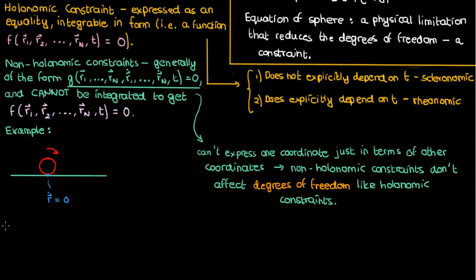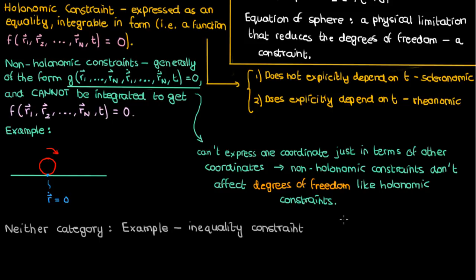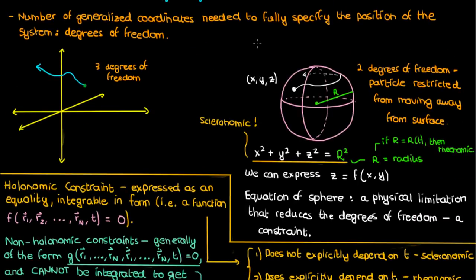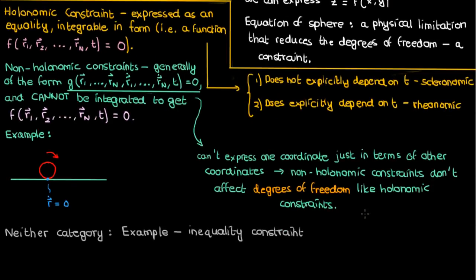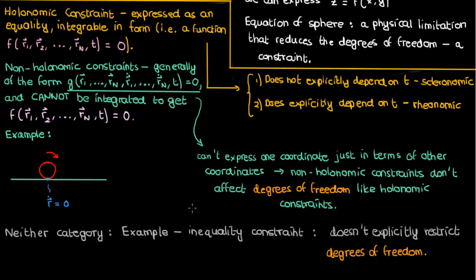There's also a third type of constraint — a more controversial one — that falls into neither holonomic nor non-holonomic. It's controversial because sometimes these neither-category constraints are classified as non-holonomic, depending on the book you're reading. An example is an inequality constraint. Returning to the particle and sphere example, this constraint would say that the particle must be found outside the sphere and cannot touch or go inside it — in other words, x-squared plus y-squared plus z-squared is greater than capital R squared. Just like non-holonomic constraints, this inequality constraint doesn't explicitly restrict the degrees of freedom; the particle can still move freely in three dimensions, it just can't access the region defined by the sphere.